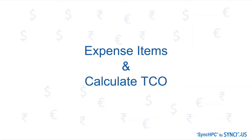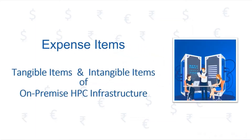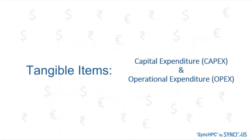As Stage 2 and Stage 3 are very much dependent on each other, let's understand them jointly. First, we will see the expense items of on-premise HPC. CAPEX and OPEX are the two aspects of tangible items.